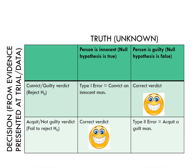Again, using the table to demonstrate this: the null hypothesis is that the person is innocent, the alternative is that the person is guilty, and then we can either convict them — rejecting the null — or acquit them, failing to reject the null. Convicting someone who is innocent would be a type 1 error; acquitting someone who is guilty, a type 2.